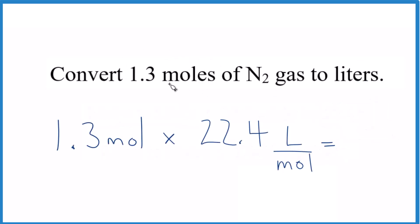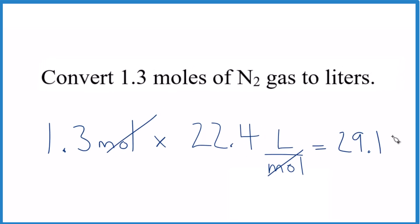We have 1.3 moles given in the problem times 22.4 liters per mole. When we multiply, moles on the top and bottom cancel out. We're left with 29.1 liters, because that's the only unit remaining, of nitrogen gas.